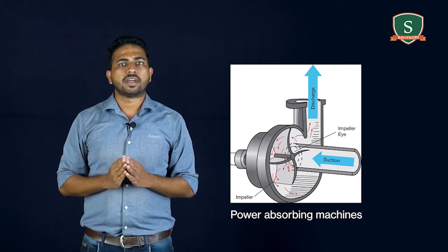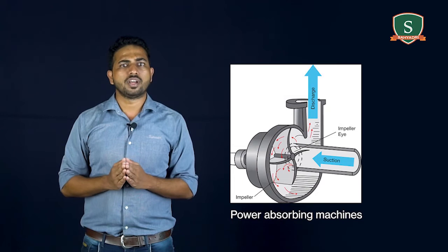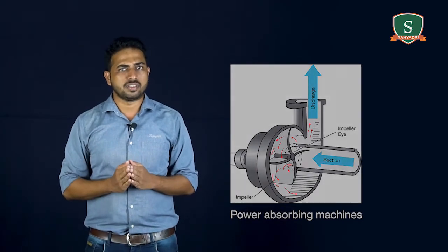Next, the second classification according to the input or output at the shaft of the turbo machines. First one is power absorbing machines. Mechanical energy or power is absorbed by the machine. Examples are centrifugal pumps, fans, blowers, and compressors.